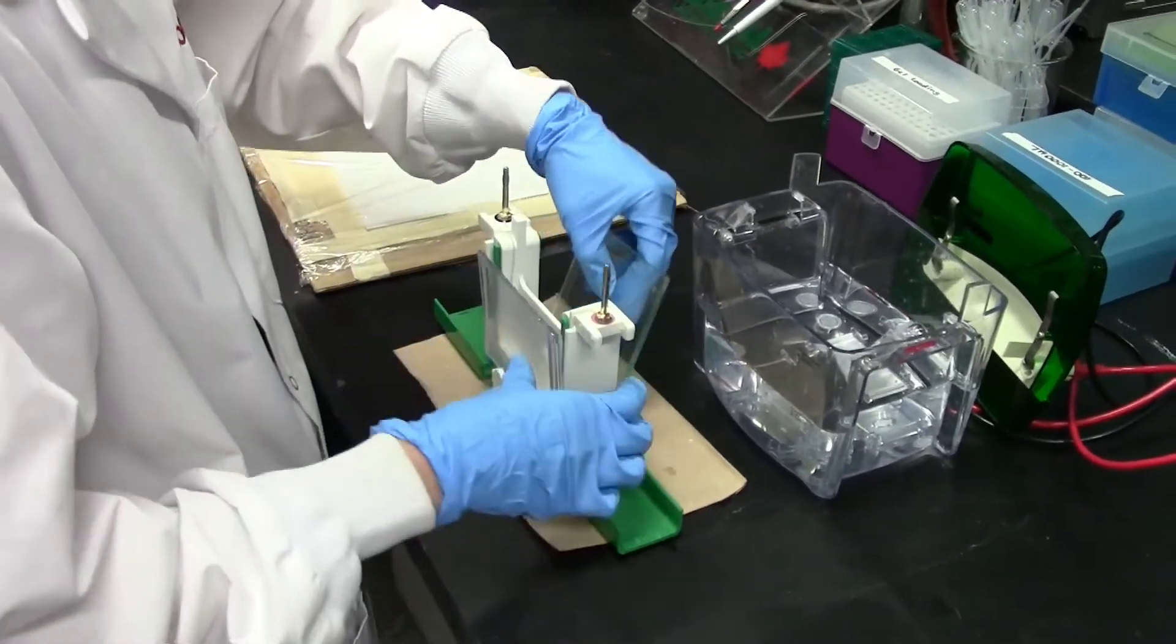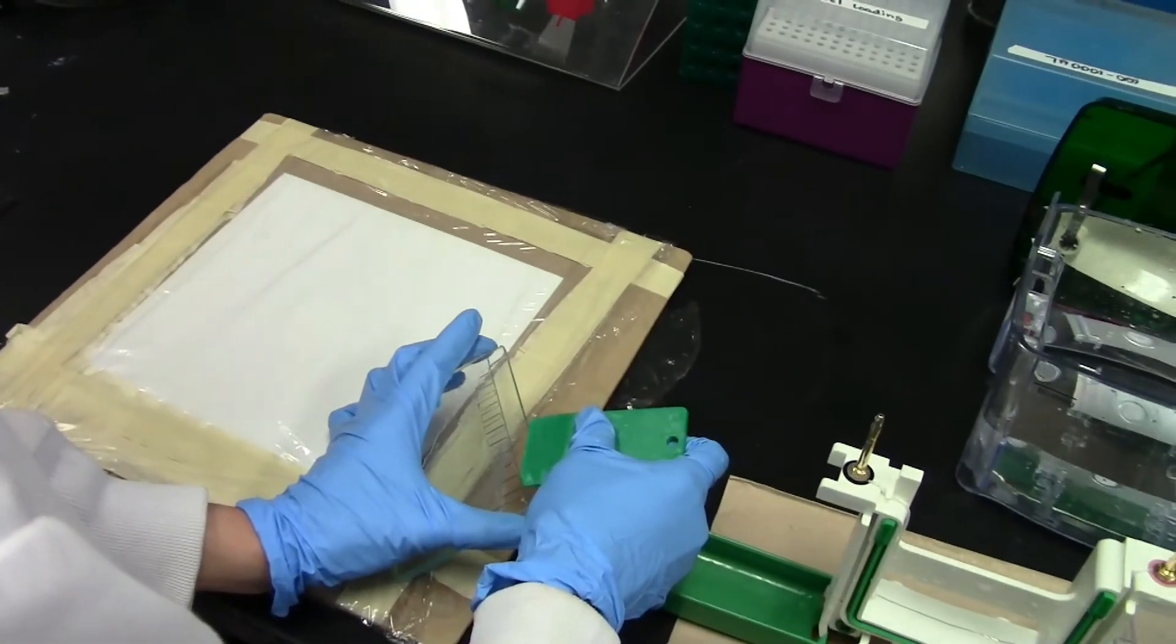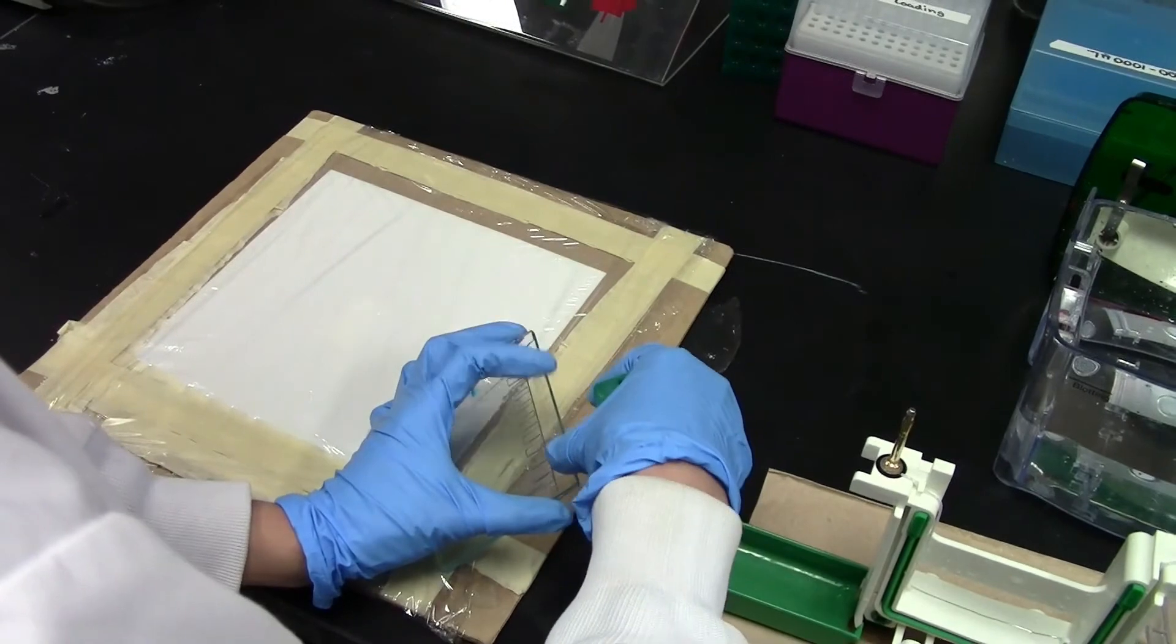To visualize the gel, remove the electrode assembly from the buffer tank and take out the plates holding your gel. The used buffer can be conserved and reused to fill the bottom of the buffer tank for other gels.